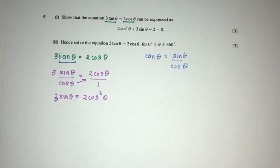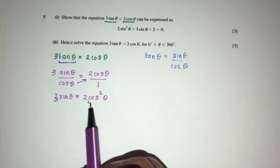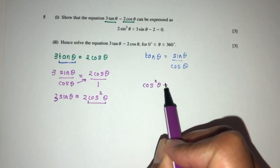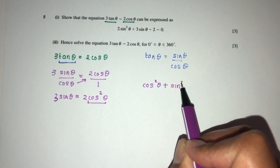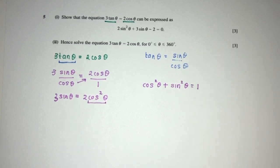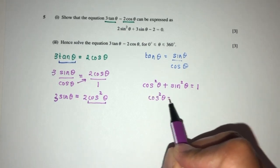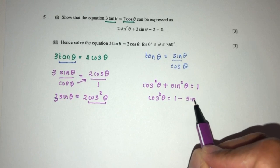So now we can always try to expand this because we know that cos²(θ) + sin²(θ) = 1. So we know this is given to you as well on your list of formula. Now, let's make this become the subject. That will be 1 - sin²(θ).